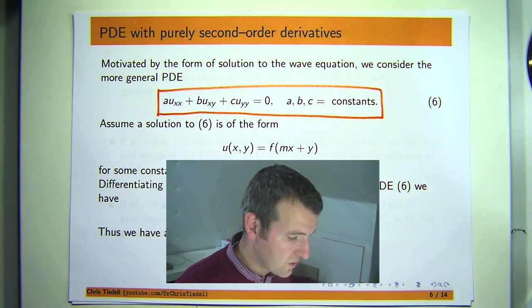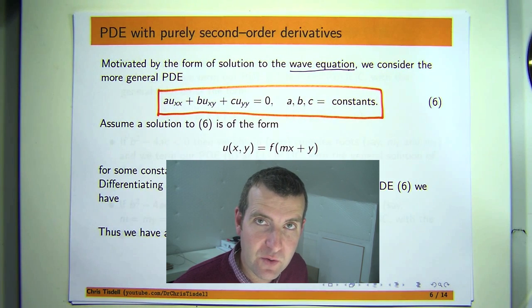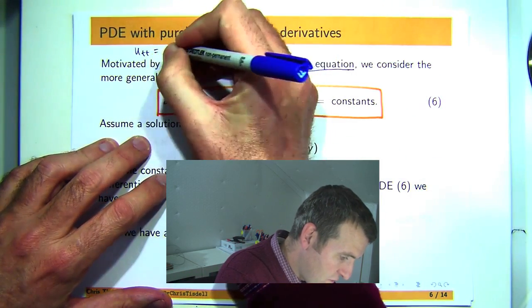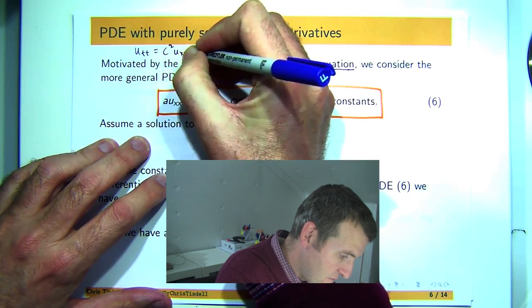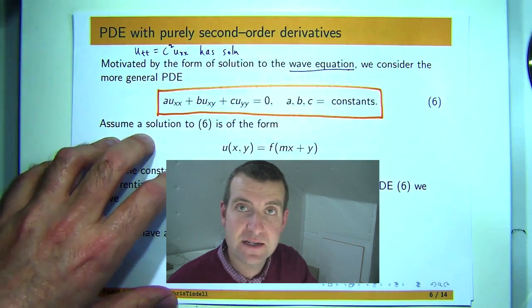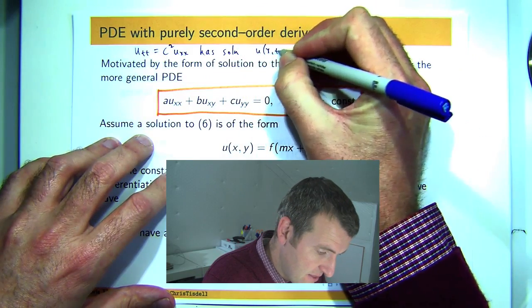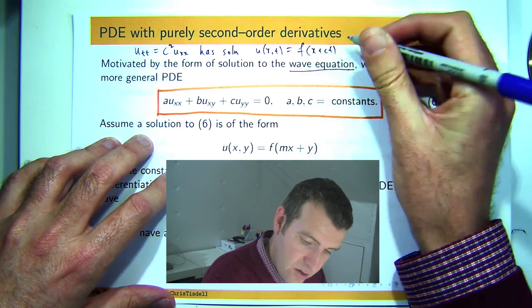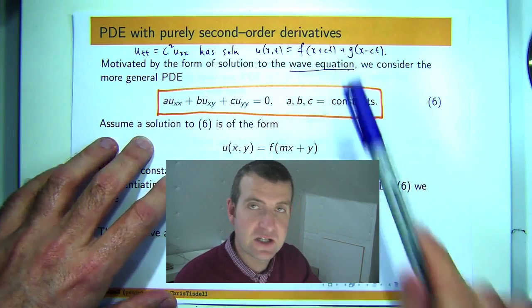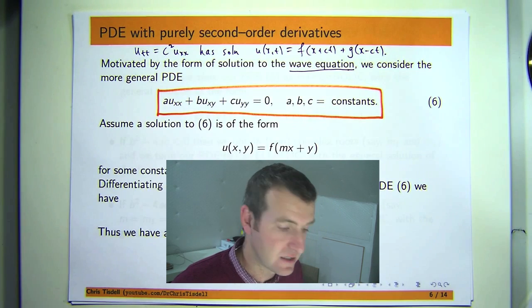Now in previous videos we looked at the wave equation and we used a technique to solve the wave equation known as the method of factoring. So just to refresh our memory, the wave equation in one spatial dimension is this, C is a constant. And we factored it down to two first order problems which we knew how to solve. And we discovered that the solution was of this form where F and G are arbitrary but differentiable functions. And you can see in the argument here we've got linear type expressions, remember C is just a constant.